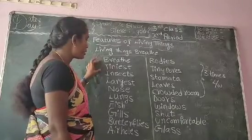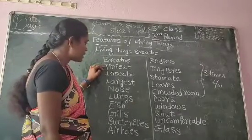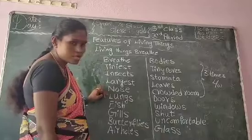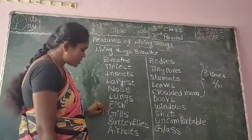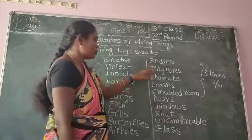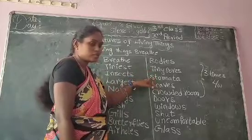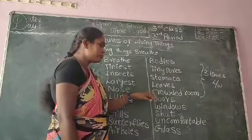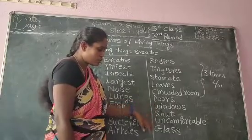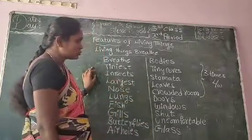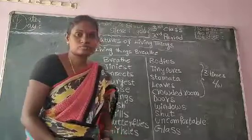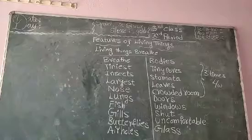All of you, once again repeat after me: breathe, tiniest, insects, largest, nose, lungs, fish, gills, butterflies, air holes, bodies, tiny pores, stomata, leaves, crowded room, doors, windows, shut, uncomfortable, glass. Okay. It's time to finish. I will meet you next class. Thank you. Bye.